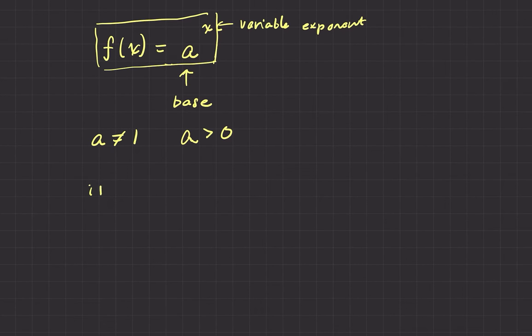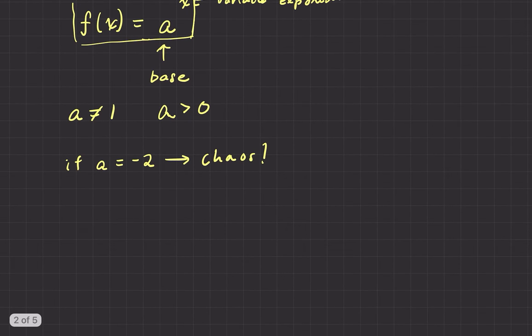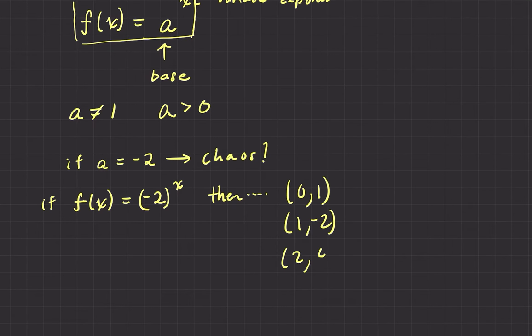And we don't want to deal with negative bases, because that gets really interesting, but not very useful. So, for example, if a equals negative 2, then I'll just say chaos. It gets crazy. So how come? Well, it's just looking at what we know about negative numbers and exponents. So if we say if f(x) equals negative 2 to the x, so it's just like our parent function, only instead of 2 as the base, we have negative 2 as a base. Then, what happens? If we plug in 0, we have negative 2 to the 0, and it outputs 1. Plug in 1, the output's negative 2. Negative 2 to the 1 is negative 2. If we plug in 2, negative 2 squared is 4, and right away we notice, oh, look at that. We start off with a positive output, then a negative, then a positive. It's jumping all over the place.